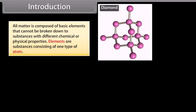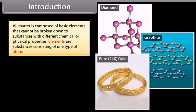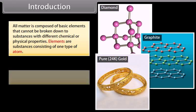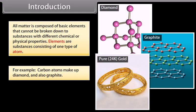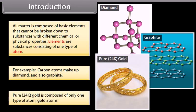All matter is composed of basic elements that cannot be broken down to substances with different chemical or physical properties. Elements are substances consisting of one type of atom. For example, carbon atoms make up diamond and also graphite. Pure 24 karat gold is composed of only one type of atom, gold atoms.